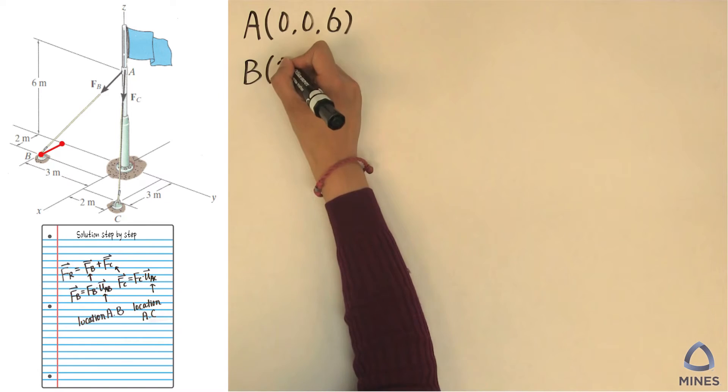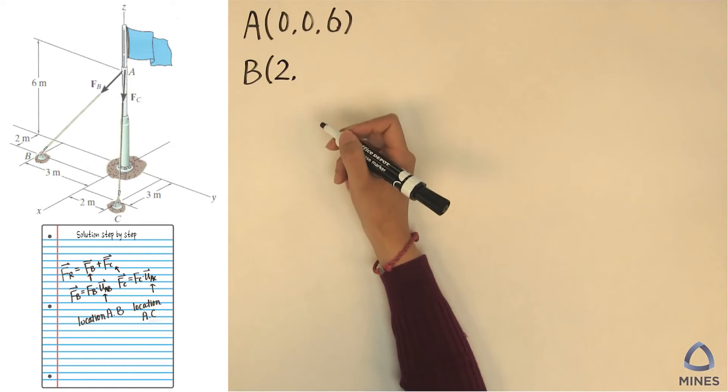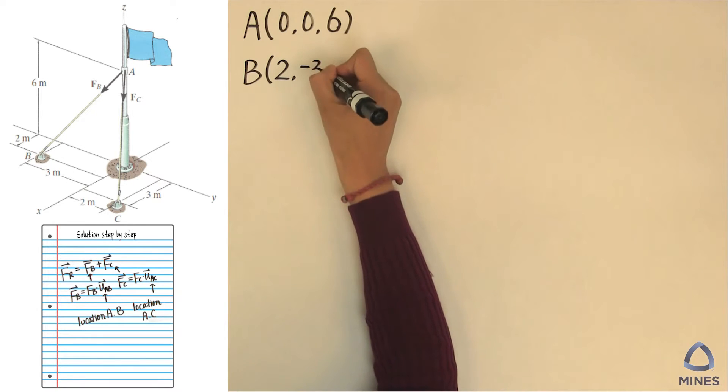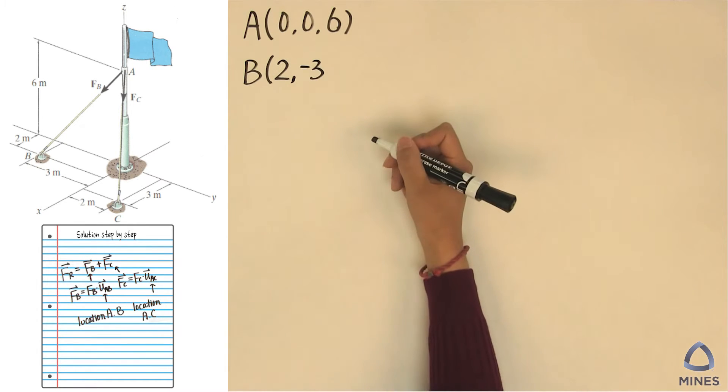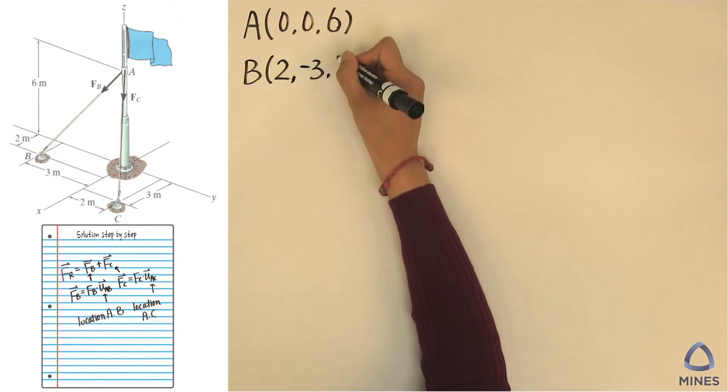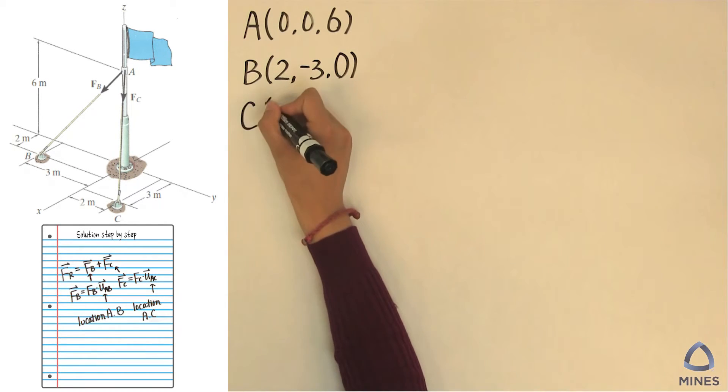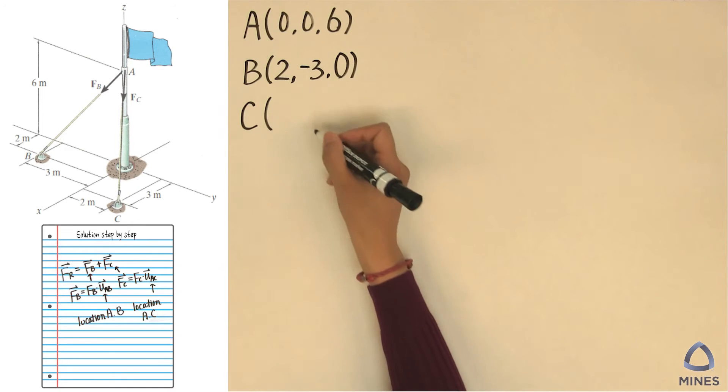However, B is in the negative y direction, so that's why we have to make negative 3 as the y location for B. And it's on the x, y plane, so that's 0. Then we can try to find the C location.